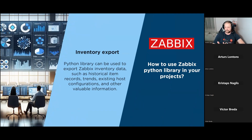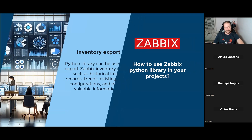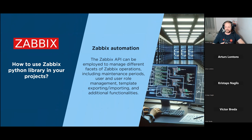Another example is data export: you can export historical data, trends, hosts, configurations, templates, and other items. For example, if you like to do versioning of your templates, you can use Zabbix utils and Python to export them on a schedule - that would be pretty useful. Zabbix automation is perhaps one of the most obvious uses of Zabbix utils, since Zabbix API covers many aspects of Zabbix. You can set maintenance periods, create groups, user groups, export and import templates. If you have many Zabbix instances - 10, 20, or 100 - this can all be easily done using Zabbix utils.